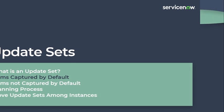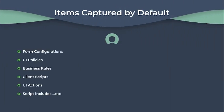Next, items captured by default. Most configurations are captured by default in the update set. If we configure a form, it is captured by default. If we are creating any UI policy for any catalog item or for any field, it is also captured by default. The same applies for business rules and client scripts — if we are creating or customizing any business rule or client script, the updates are captured in the update set by default. UI actions and script includes are also captured in the update set by default. There are many other items that are captured by default in the update set.